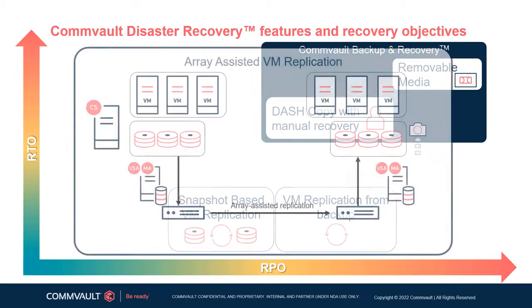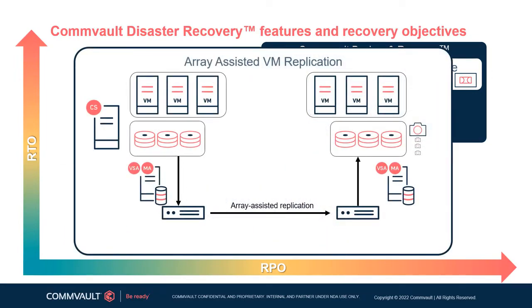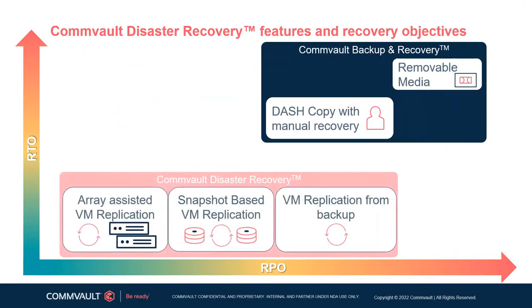The final replication mode is array-assisted remote replication, which improves data availability through mirroring of volumes between two sites. This mode offers continuous replication for workloads with near-zero RPO requirements. Requirements and options for VM replication depend on both the data replication mode and on hypervisor type. For Commvault Disaster Recovery hypervisor-specific requirements for both source and destination VMs, please consult the Commvault documentation website.